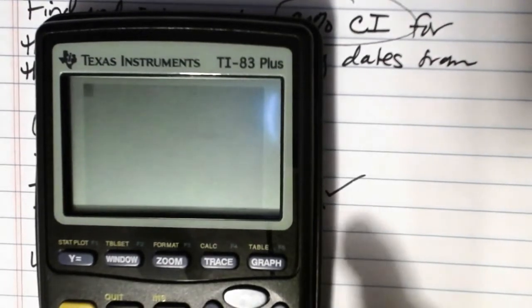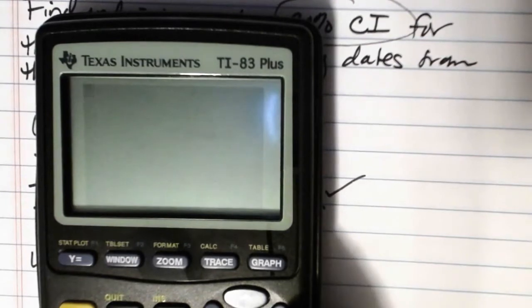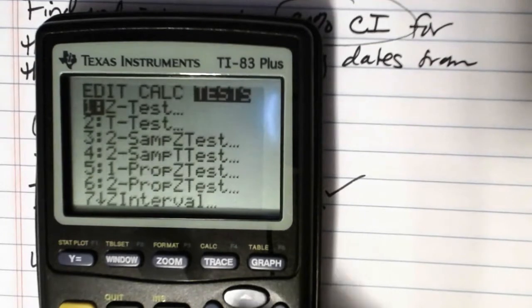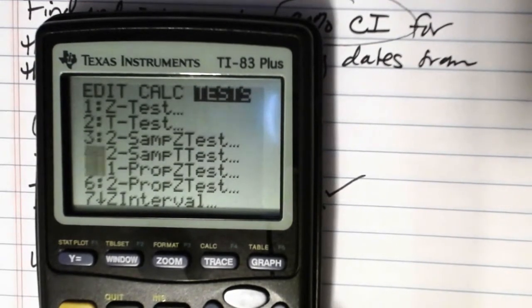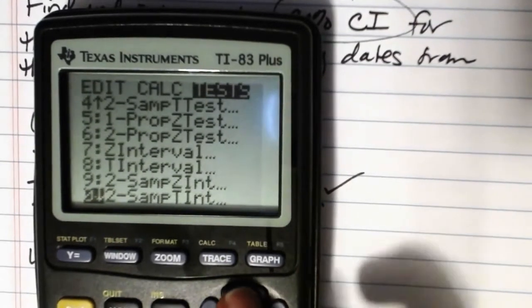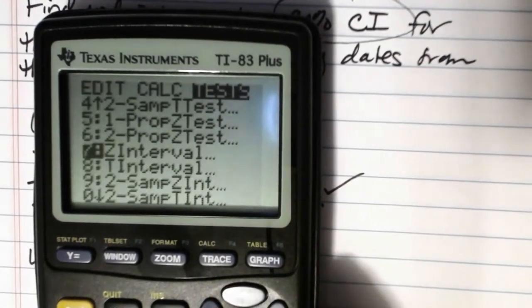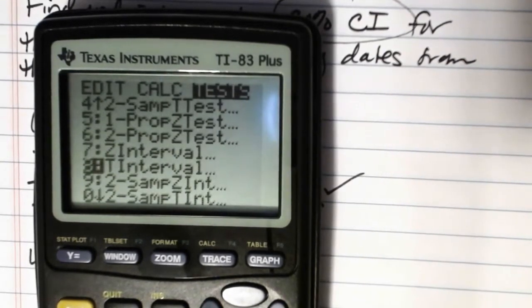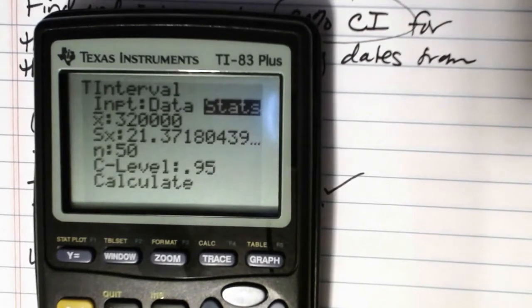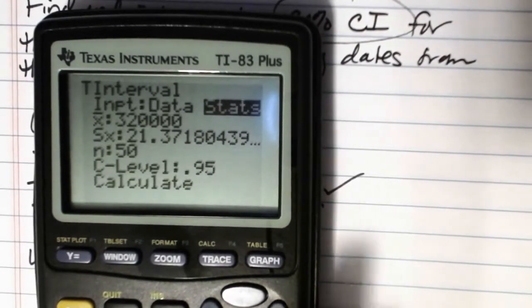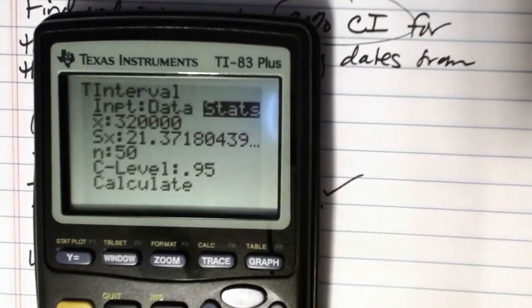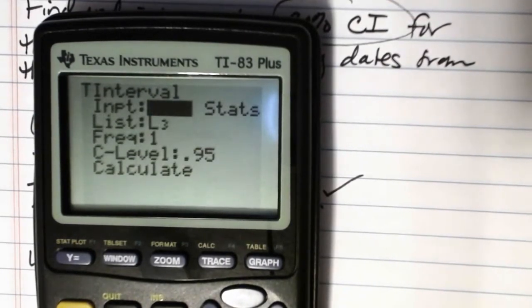Then, where we'll want to go is the same place that we went to find the Z interval. We go to stat, use the right arrow key to scroll all the way over to the right to the tests menu. And then we need to scroll down until we see the ones that say interval at the end. And there's Z interval, that's the one that we used when sigma was known. Here's T interval, the one that we use when sigma is unknown. So we select T interval. Then the calculator asks us, do we have data or do we have stats? We actually have data here. So we'll want to select that.